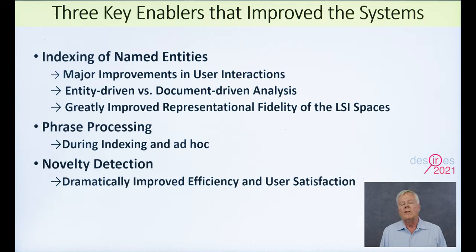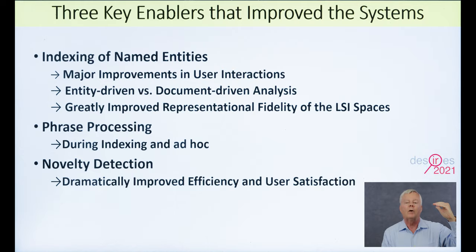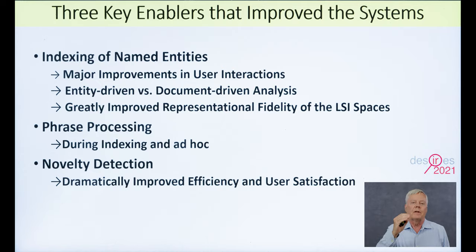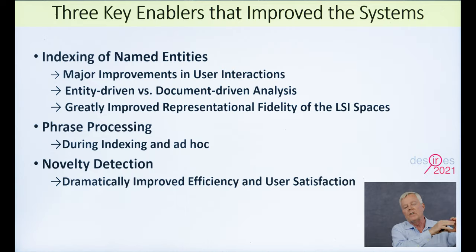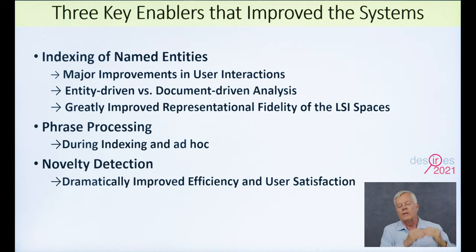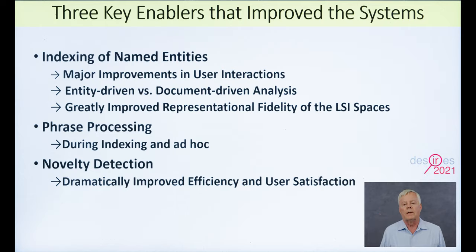The third thing that made a big difference was novelty detection. In these very large collections, it's straightforward for a user to make a query that brings back a result list consisting of thousands of documents. There's enormous duplication in those lists, and enormous overlap with the knowledge the user already has, so it's very inefficient to go through thousands of documents. What we did in the best systems we built was to monitor user activity. Every time they saved a document or cut and pasted from it, we would save that information. Any time they wrote a draft report or made notes, we would take that information and construct a complex representation of their knowledge. Then we could take these long result lists and re-rank them, presenting relevant documents in the order in which they are least like what the user has already seen, and therefore most likely to have new information.